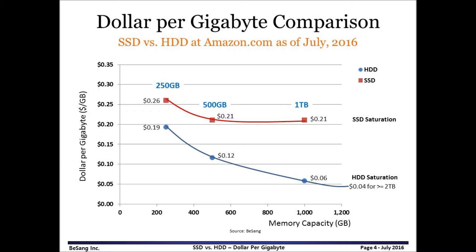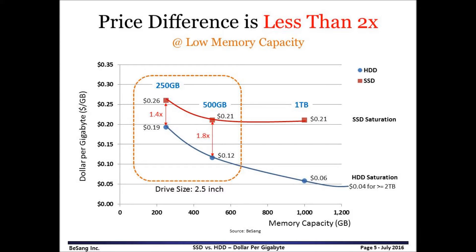The price difference between SSD and HDD is small at low capacity, and the difference becomes bigger at high capacity. For high capacity storage devices, the price of SSD saturates at 21 cents per gigabyte, and HDD saturates at 4 cents per gigabyte. There are not many SSDs bigger than 2 terabytes in the market. At small capacity — certainly the mobile application market — the price gap between SSD and HDD is less than twice: 1.4 times at 250 gigabyte and 1.8 times at 500 gigabyte. Considering the better performance of SSD, the price seems very attractive.